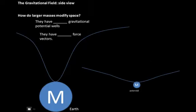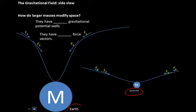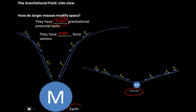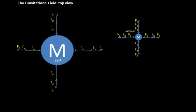If we consider this like a two-dimensional side view, let's look at how larger masses modify space — how a large mass like the Earth modifies space as opposed to a smaller mass like an asteroid. Looking at the forces due to gravity, they increase as we get closer to the actual masses in these gravitational wells. A larger mass has a larger gravitational potential well and also larger force vectors. From the two-dimensional top view, the force due to gravity on the Earth is larger at the surface of the Earth as opposed to the surface of that asteroid.